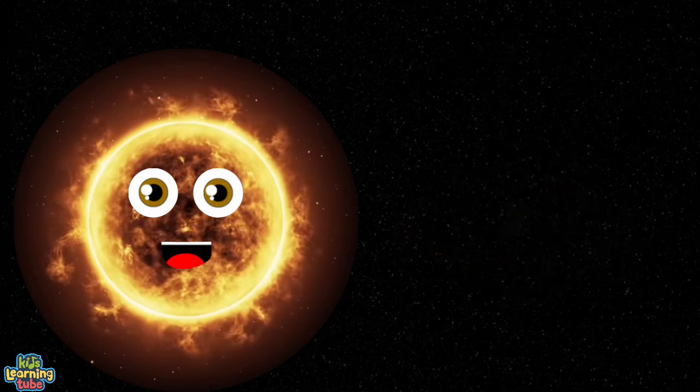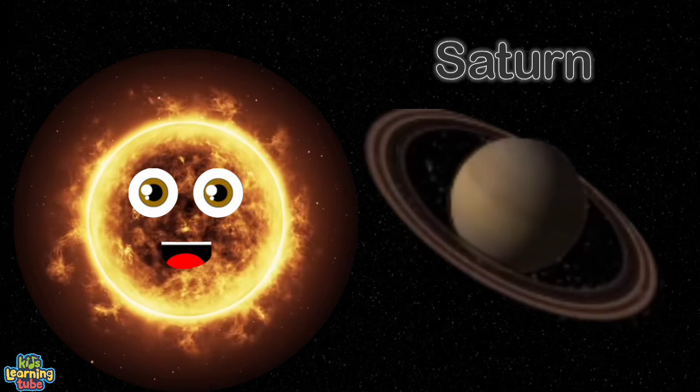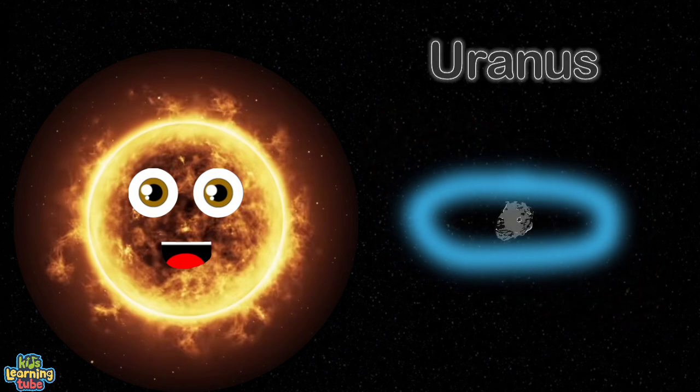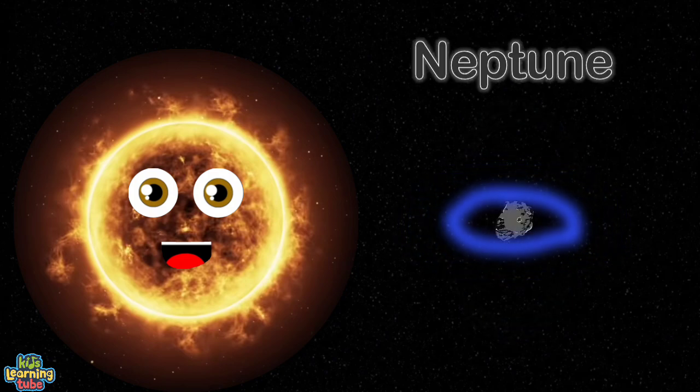The next planet that formed is thought to be the planet we all call Saturn with the rings we see. The next two planets that formed in theory are Uranus and Neptune, giant and icy.